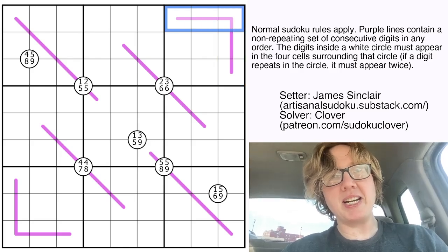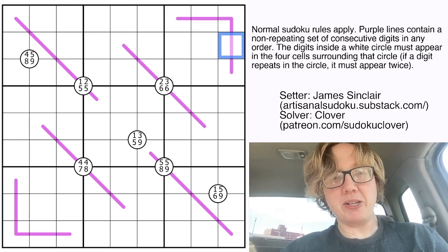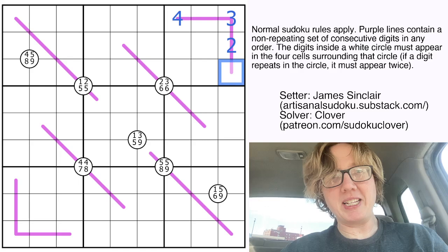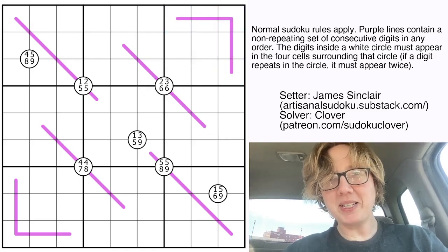So for example, this line could have 2, 3, 4, 5, 6, but they wouldn't necessarily have to go in that order. They could go like 2, 3, 4, 5, 6 in any arrangement. So let's go ahead and solve.